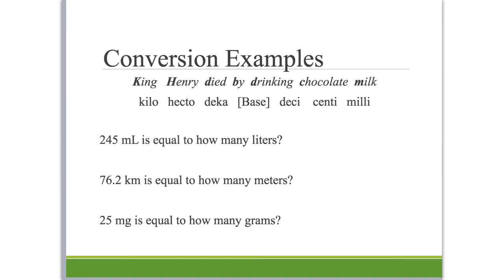I want to give you some examples of conversion problems that you can refer to when you're working on this in the classroom. We have our phrase King Henry died by drinking chocolate milk that arranges our prefixes in the correct order: kilo, hecto, deca, base, deci, centi, milli. Our first problem asks: 245 milliliters is equal to how many liters?